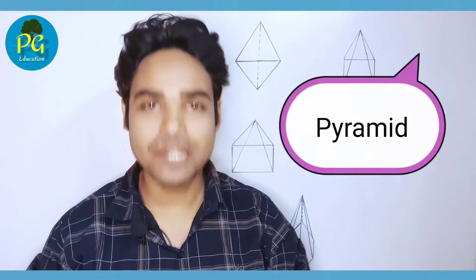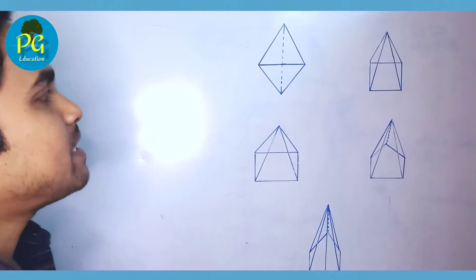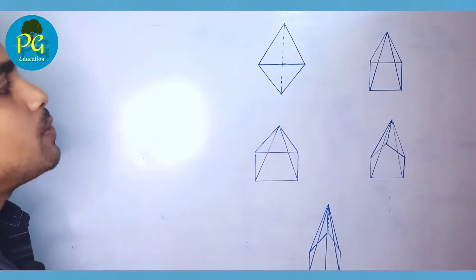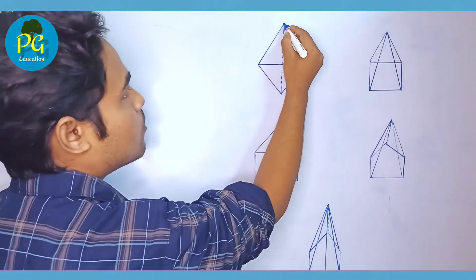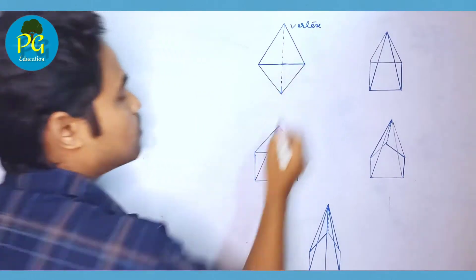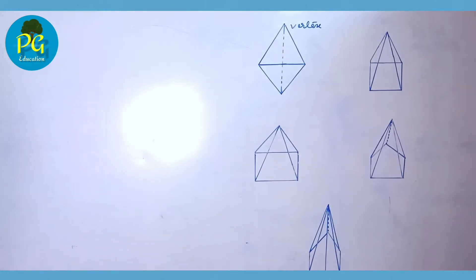Welcome to our next video. In this video we will understand lateral surface area, total surface area, and volume of a pyramid. A pyramid is a three-dimensional figure with triangular sides meeting at a point called the vertex. No matter what is the shape of the base.